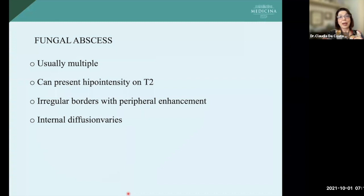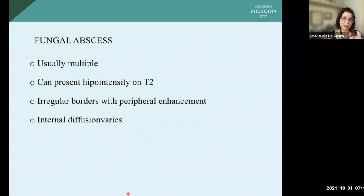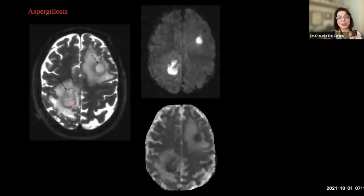Fungal abscess: fungal abscesses are usually multiple. They can present hypointensity as a halo or inside the lesion, have irregular borders, sometimes internal projections, and peripheral enhancement. Diffusion is variable — you can have increased or decreased diffusion. Multiple lesions with more irregular borders and central necrosis. In this case of histoplasmosis, the center shows restricted diffusion.